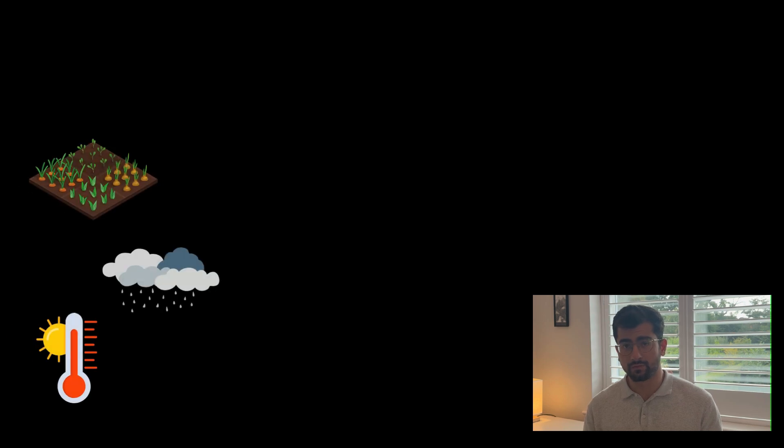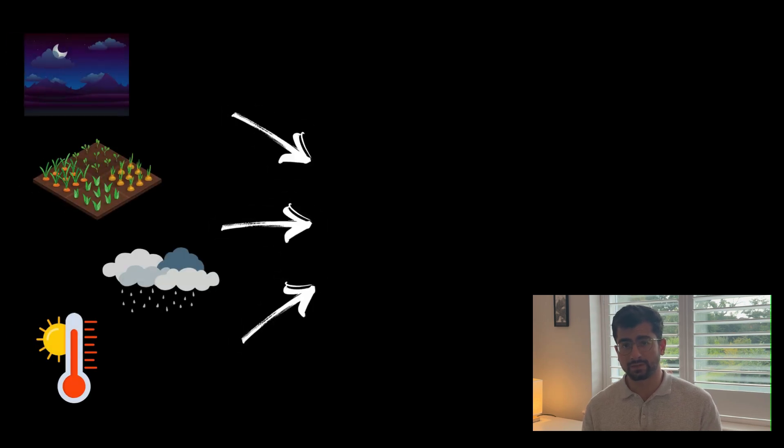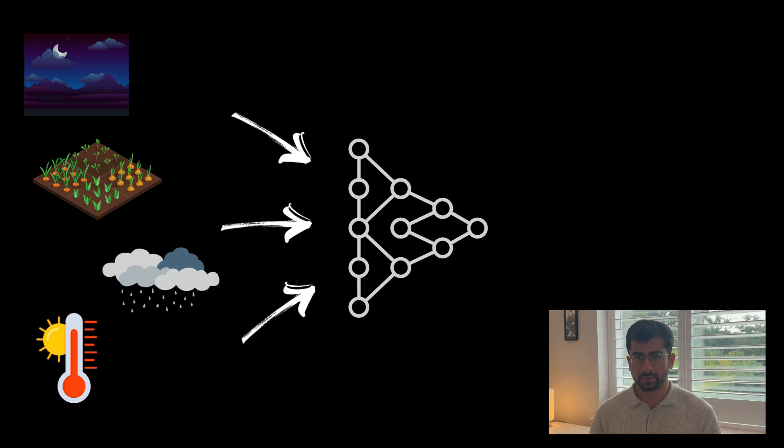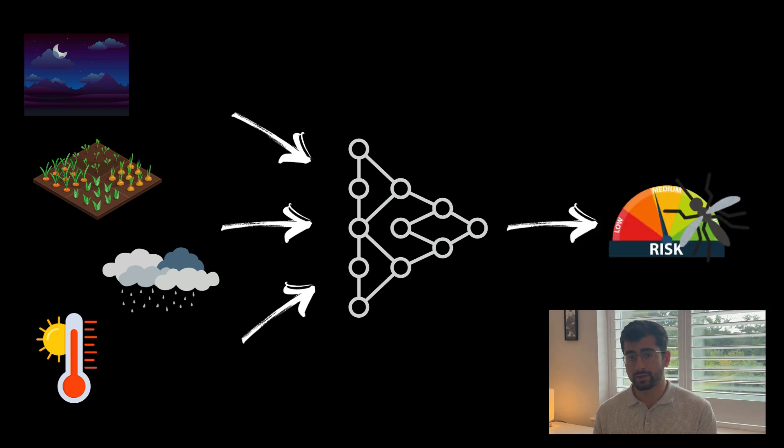They developed a multi-dimensional LSTM model that simultaneously analyzed environmental indicators such as temperature, rainfall, vegetation measures, and nighttime light to predict malaria incidents in the South Asian belt, including Pakistan, Bangladesh, and India.